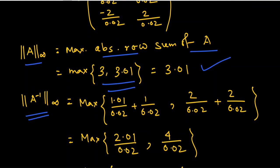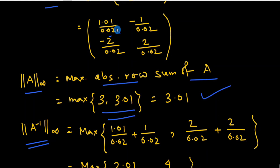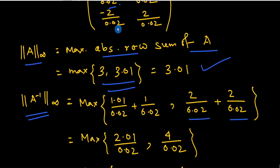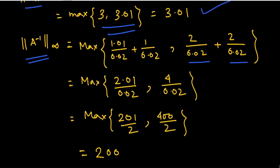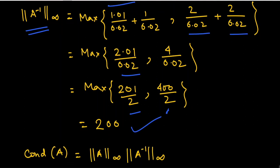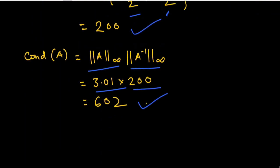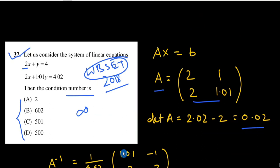The infinity norm of A inverse equals the maximum of the absolute row sums of A inverse: the first row gives (1.01 + 1)/0.02 = 2.01/0.02, and the second row gives (2 + 2)/0.02 = 4/0.02. This gives the maximum of 201/2 and 400/2, which equals 200. Therefore cond(A) = norm∞(A) × norm∞(A inverse) = 3.01 × 200 = 602.